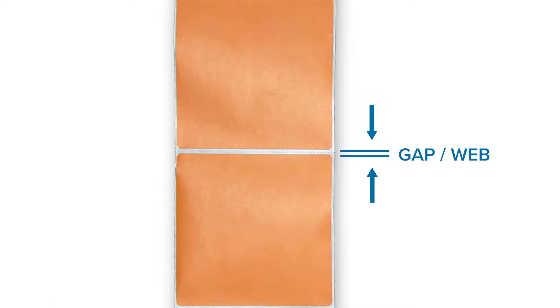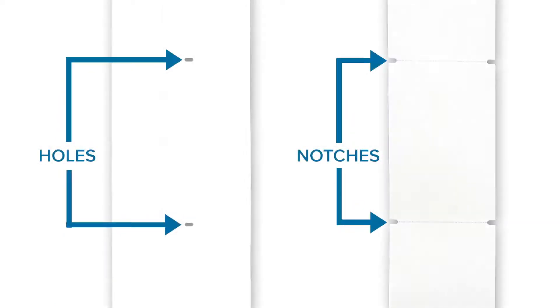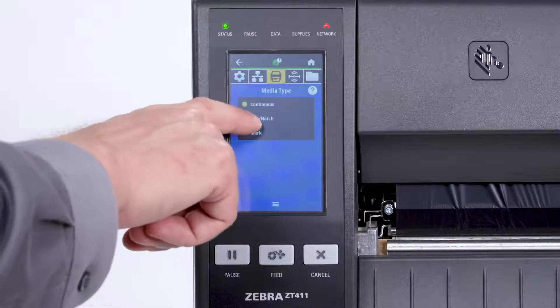If your media has a gap, also referred to as web, or has holes or notches, select Gap Notch in the menu.